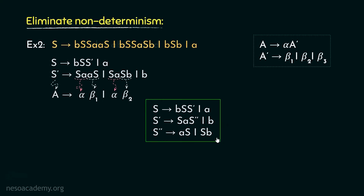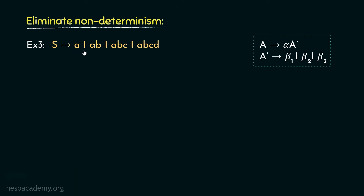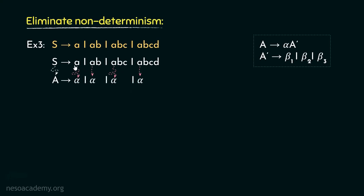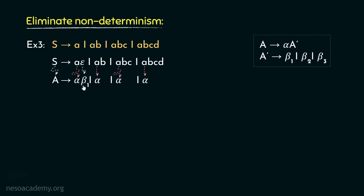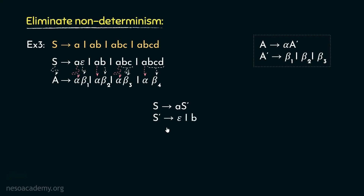Let's move on to the final example. Observe this grammar: S can either be rewritten as A, or AB, or ABC, or ABCD. If we consider S as the generic non-terminal A, then the common prefix or alpha in all four productions is A. This A can be represented as A followed by Epsilon. So the respective betas are: Epsilon (beta1), B (beta2), BC (beta3), and BCD (beta4). Performing left factoring: S → A S', and S' can be rewritten as Epsilon, B, BC, or BCD.